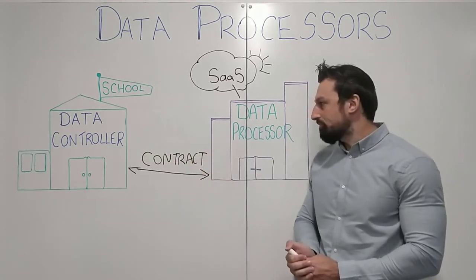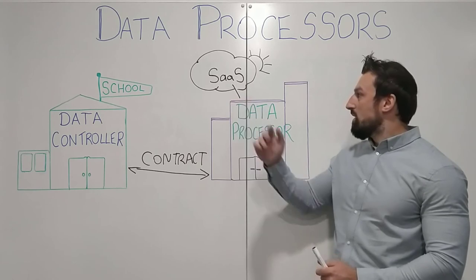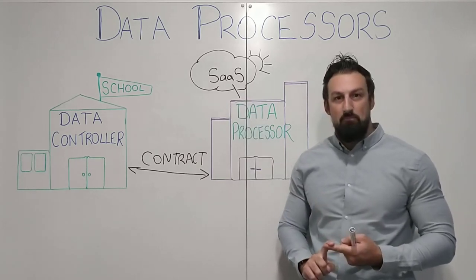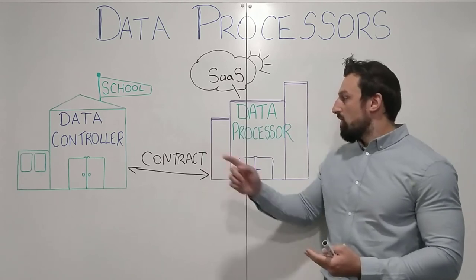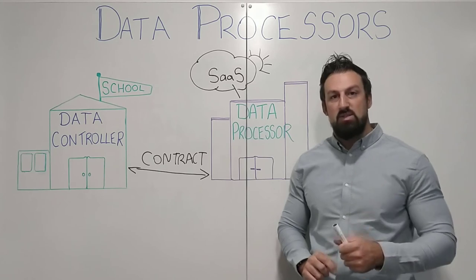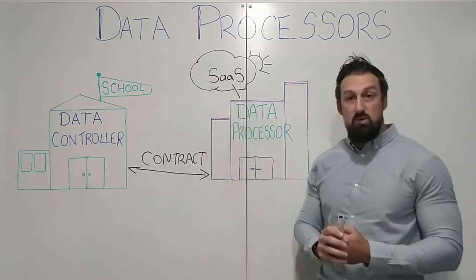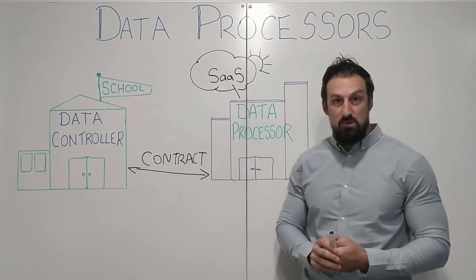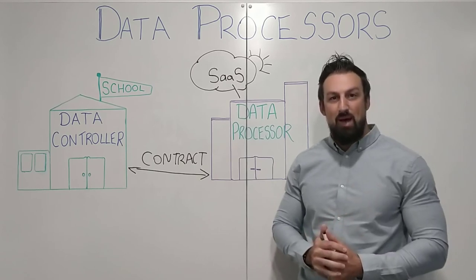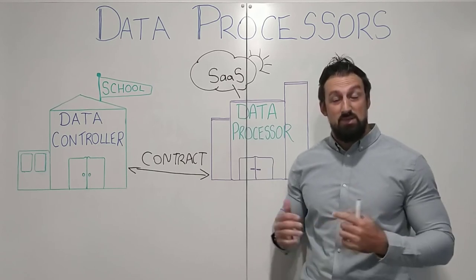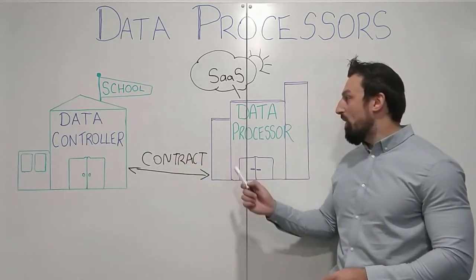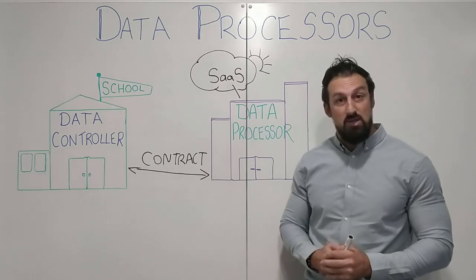So we've identified who a data processor might be, and then secondly what's needed if you're going to be using a data processor. And just a final tip would be if you are looking at using any third party systems that process personal data, watch our video on data protection impact assessments, because a data protection impact assessment will help you identify whether you might be using a data processor or not.